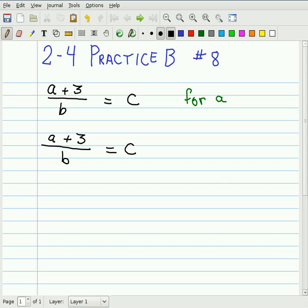We have a plus 3 that happens first, then a division by b on the whole thing. And to undo that, we are going to do the inverse operations in reverse order, so I'm going to multiply both sides by b first.